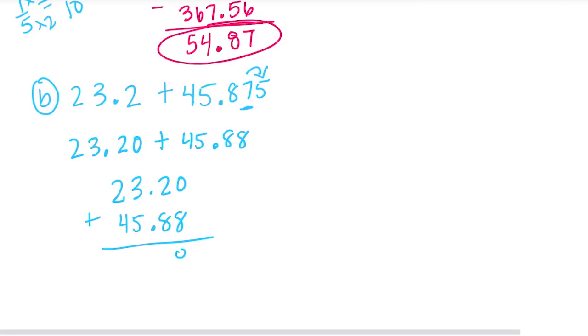0 plus 8 is 8. 2 plus 8 is 10. Bring down the decimal point. 1 plus 3 is 4 plus 5 is 9. 2 plus 4 is 6. So 69 and 8 hundredths.